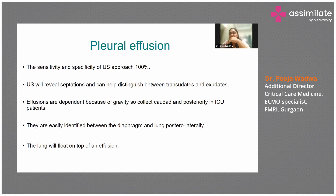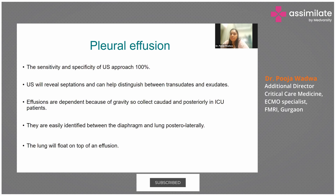Pleural effusion is very common in ICU. On ultrasound, sensitivity and specificity are around 100%. Ultrasound can reveal septations, helping distinguish between transudate and exudate, since treatment modalities differ. Effusions are fluid and dependent — usually cordial and posterior in ICU patients, so you need to move the patient and look posteriorly for the best window. They are easily identified between the diaphragm and lung posterolaterally, and the lung usually floats on the effusion — this is the differentiating sign that distinguishes lung from liver.